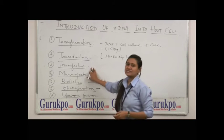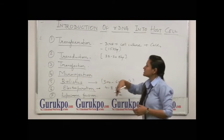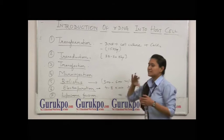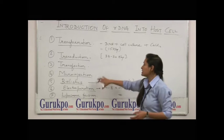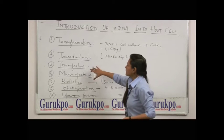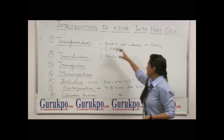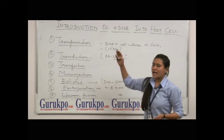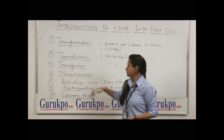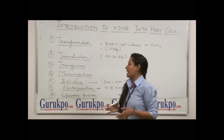The third is Transfection. Transfection is similar to transformation. The only difference is that in transfection, this happens in case of eukaryotic cells, not in prokaryotic like in bacteria. This process is the same, the DNA, the culture, and also we can use calcium chloride in case of transfection. Fourth is microinjection.